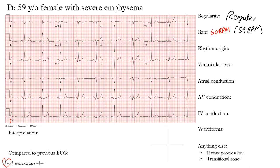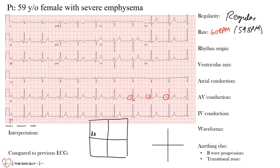Now, rhythm origin: where is this rhythm originating from? We see narrow QRS complexes, so it's likely above the ventricle. We see P waves preceding each QRS complex, so it's probably an atrial rhythm. We need to ask whether it's coming from the sinus node. The sinus node sits up behind the right atrium near the superior vena cava; from there conduction travels through the internodal pathways, AV node, His bundle, bundle branches, fascicles, Purkinje cells, and cardiomyocytes.